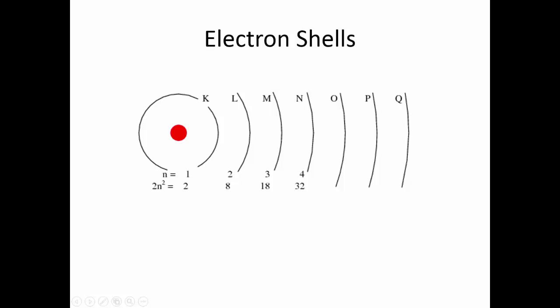Each shell can only hold a certain number of electrons, determined by the equation 2n², where n is the shell number. In the first shell, n equals 1, so 2 times 1 squared is 2. In the second shell, 2 times 2 squared gives us 8. The third shell, 2 times 3 squared gives us 18, and so on.